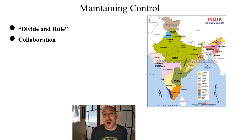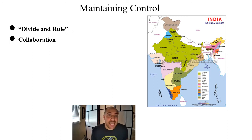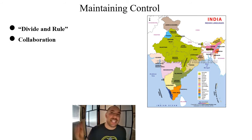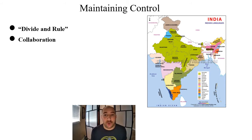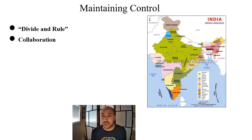British control was also made easier by large numbers of willing collaborators. Indian businessmen eagerly gained access to the new global economy and traded with the EIC, often undercutting fellow countrymen for profit. Sepoys — Indian mercenary soldiers in service to the British — numbered around 200,000 and were absolutely vital to EIC and British control of the region.